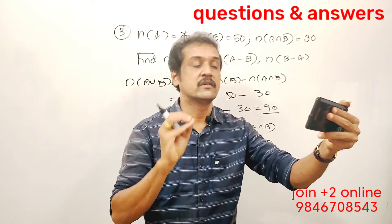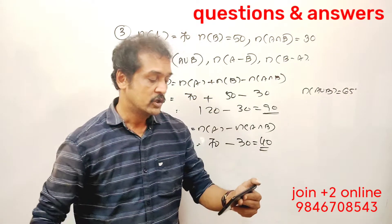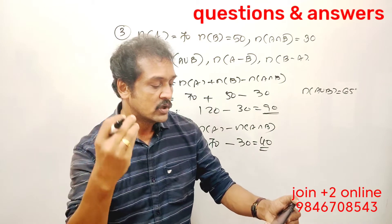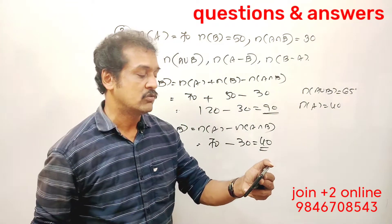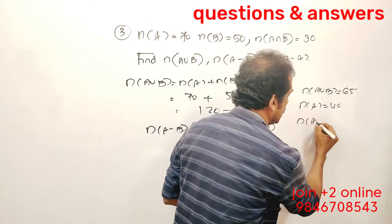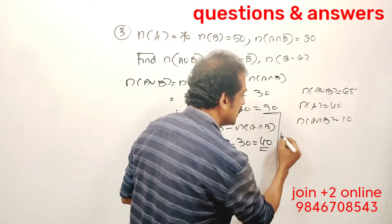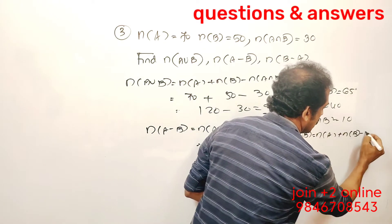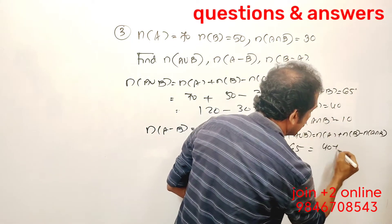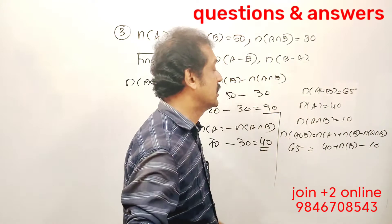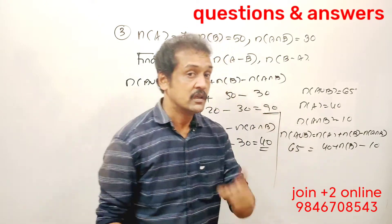In a group of 65 people, N of A union B is equal to 65. 40 like cricket, so N of A is equal to 40. 10 like both cricket and tennis, so N of A intersection B is equal to 10. Using the formula N of A union B = N of A + N of B − N of A intersection B: 65 = 40 + N of B − 10. Simplifying, N of B is equal to 35.